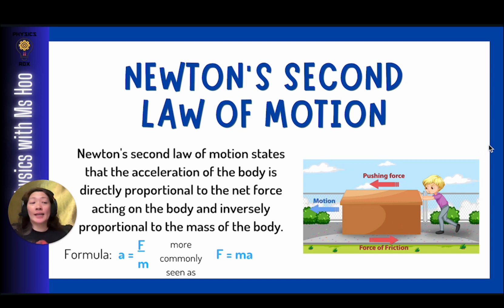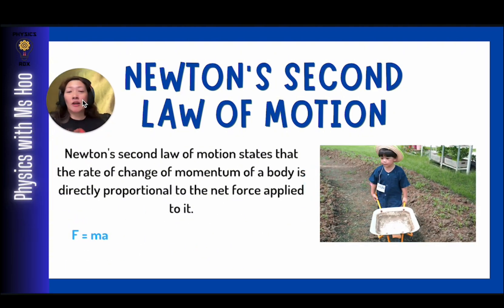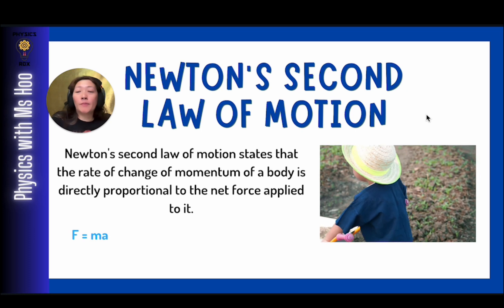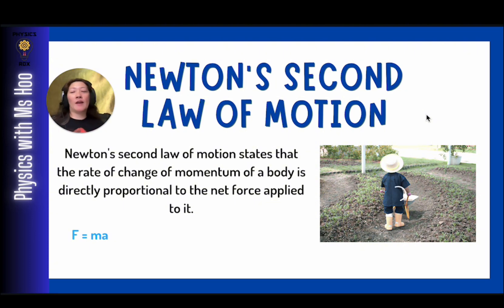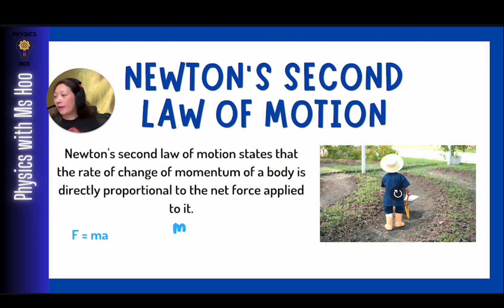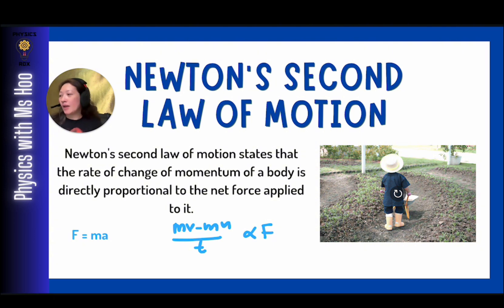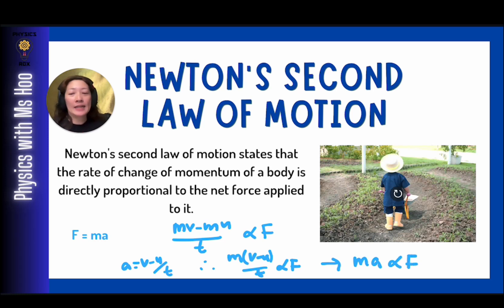Sometimes you might see Newton's second law of motion written as: the rate of change of momentum of a body is directly proportional to the net force applied to it. This is actually exactly the same as F equals ma, just worded differently. The rate of change of momentum is mv minus mu over time. Since a equals v minus u over t, you can factorize m(v minus u) over t, which gives ma proportional to F, leading back to F equals ma.